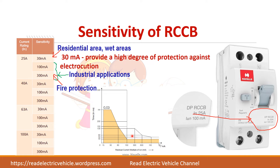This chart shows the residual current and the time period at which the breaker will trip. When it is 30 milliamps, it takes 300 milliseconds to trip. As the current increases, the tripping time should be lower for the safety of human beings.